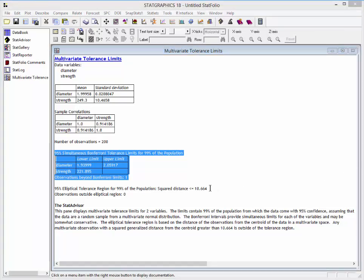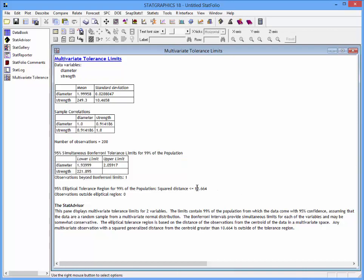You'll see down here some information about the elliptical tolerance region that was calculated using Method 2. In particular, the Monte Carlo simulation determined that the appropriate value of the constant was 10.664.